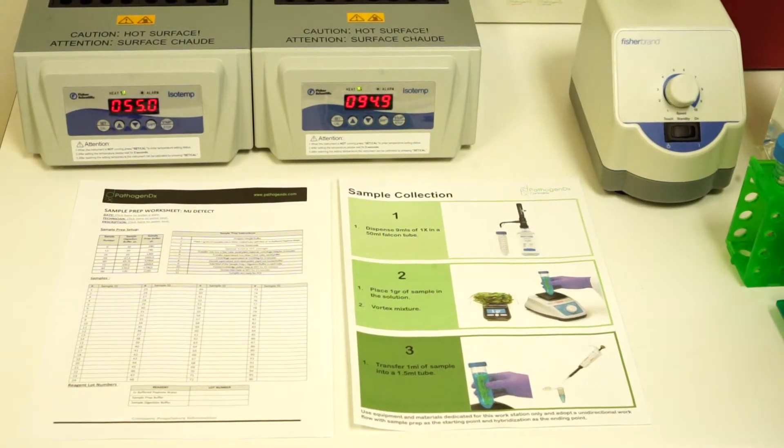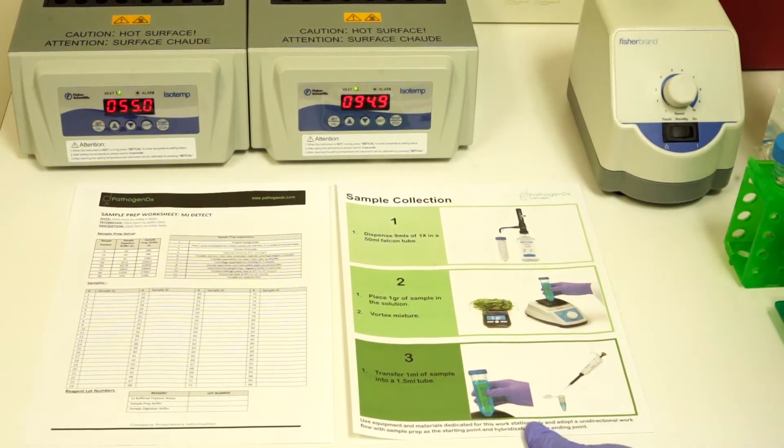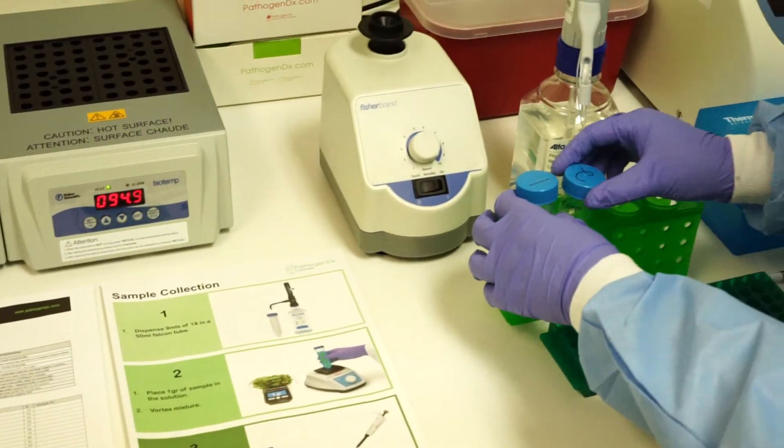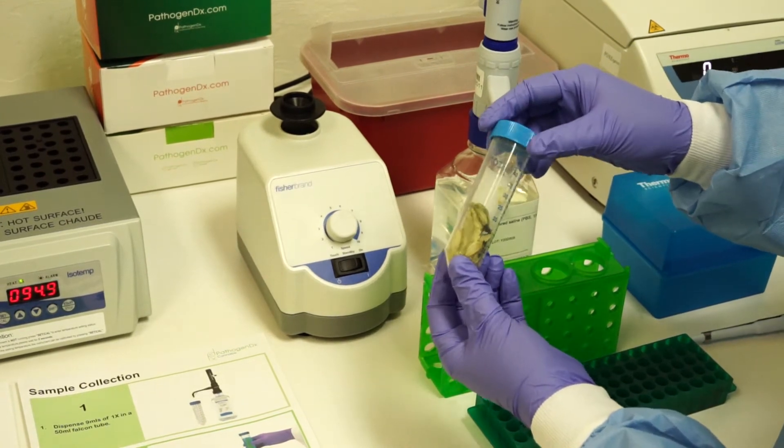To begin sample prep, please refer to the sample prep worksheet and the Quick Guide for instructions. To begin, weigh one gram of your cannabis sample into a 50 ml conical tube.